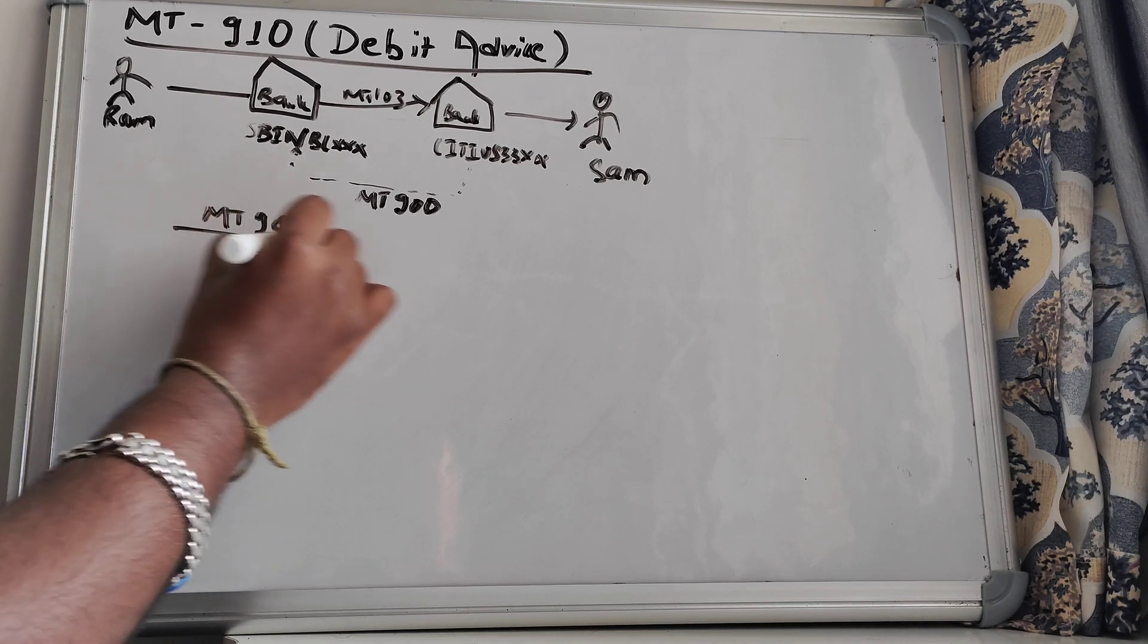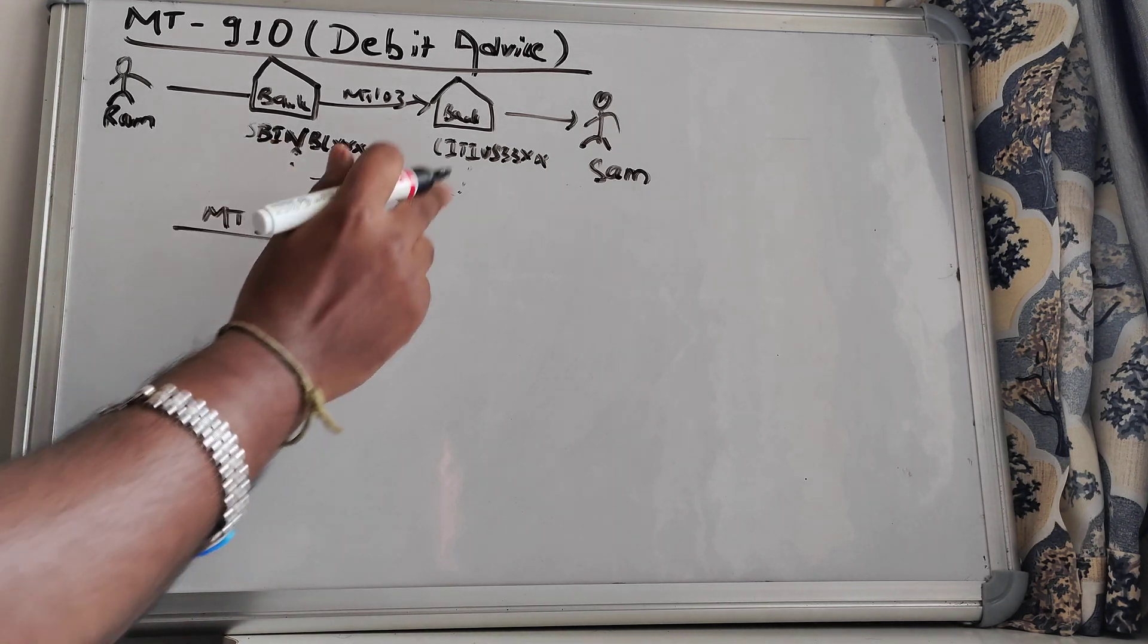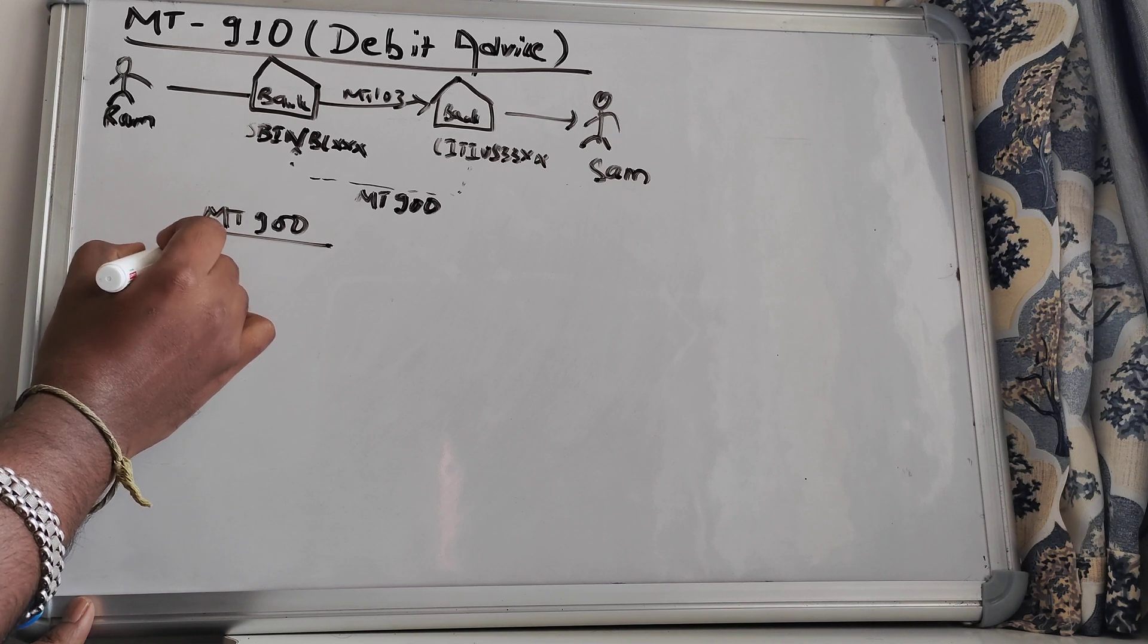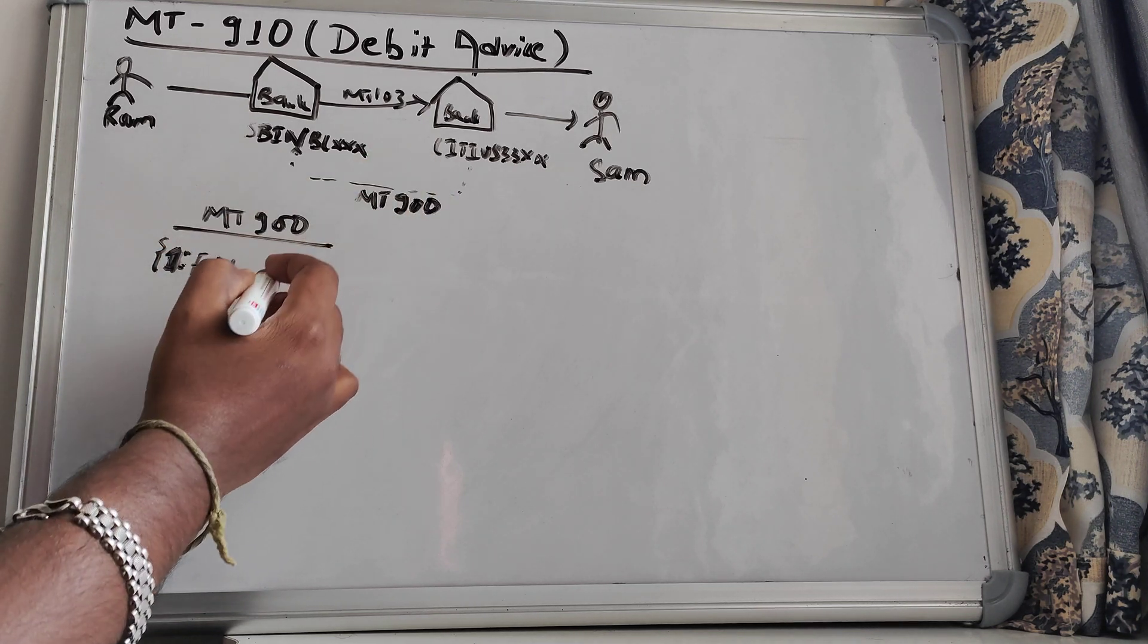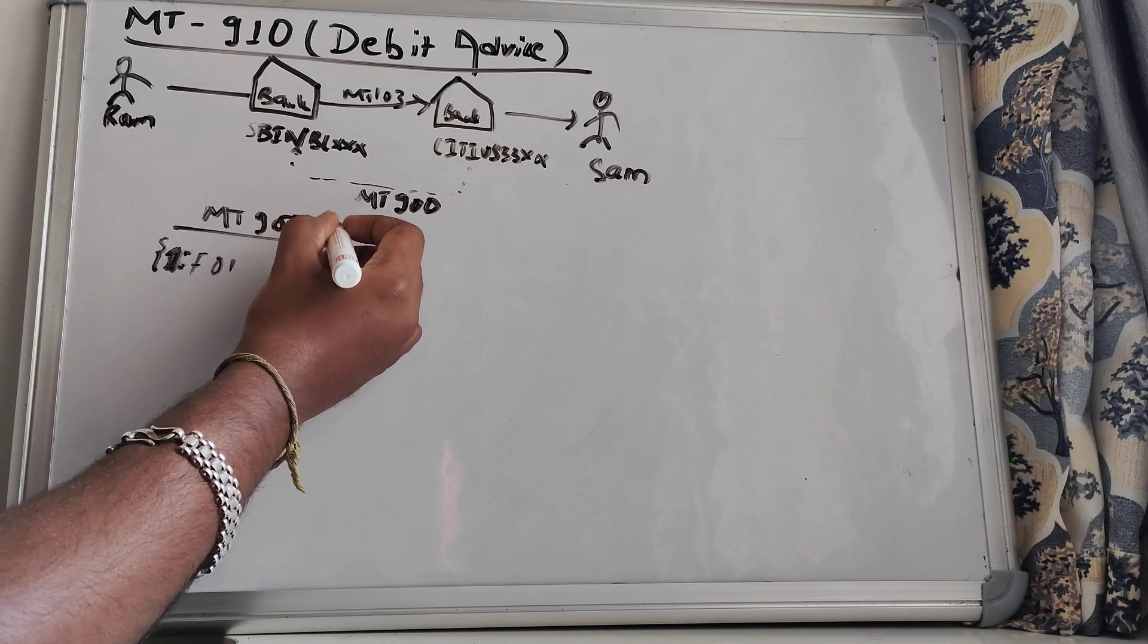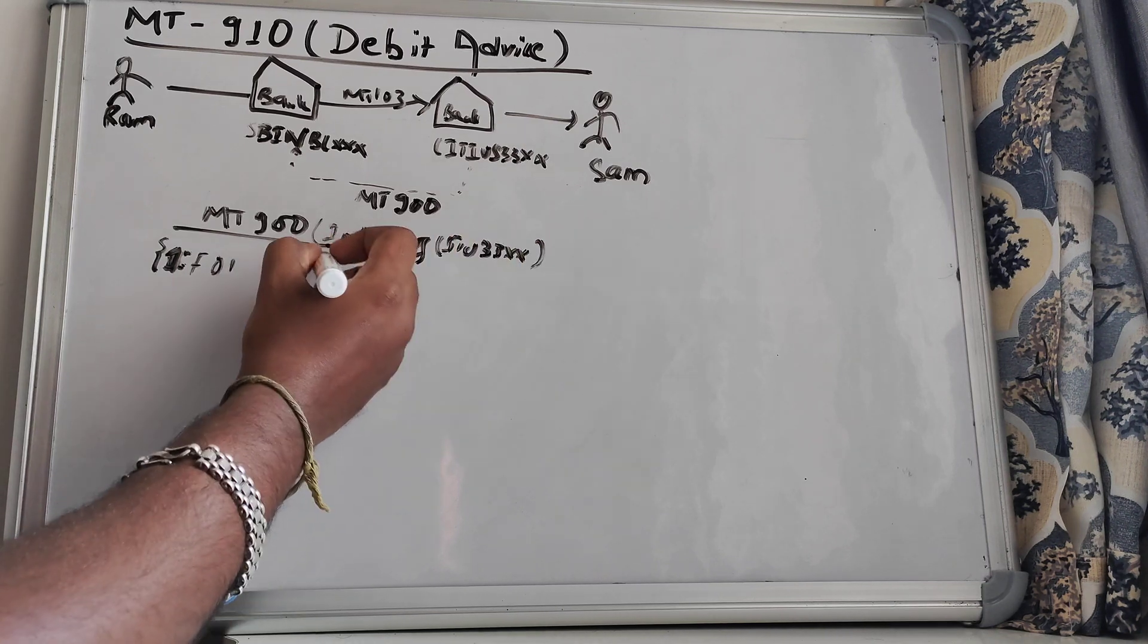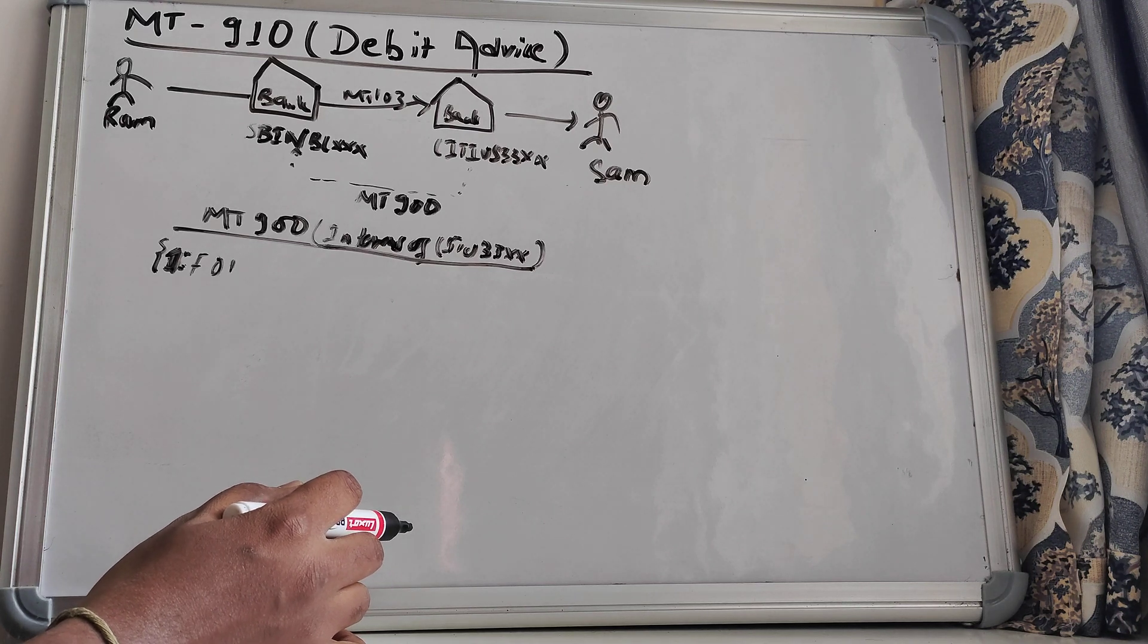Since MT-900 is being sent from City US to SBIN, here it can be F - this will be one block ID - F01, and then followed by MT-900. So I am creating one MT-900 message thinking as if I am City US 33XXX. So how will the message look like from City US 33XXX?